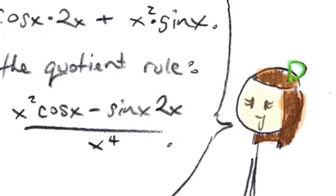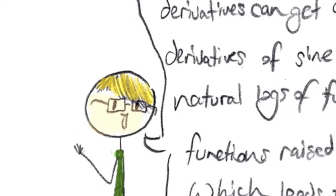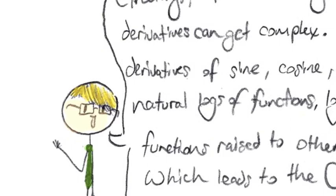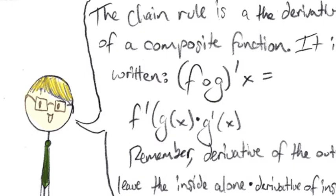Professor Chain Rule can teach you about that. Greetings, Math Man. As you have found out, derivatives can get complex. You can take derivatives of sine, cosine, tangent, and the natural logs of functions, logarithms, functions raised to other functions, etc., which leads to the chain rule. The chain rule is a derivative of a composite function. It is written, f of g derivative of x equals f derivative g of x times g derivative of x. Remember, derivative of the outside, leave the inside alone, times the derivative of the inside.